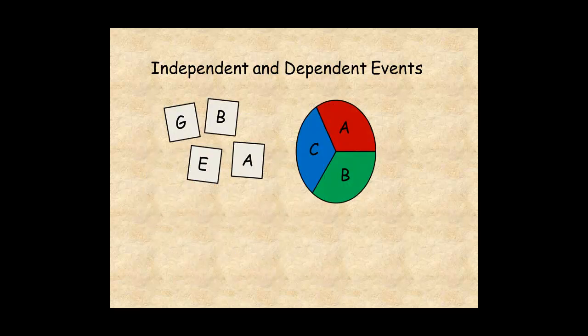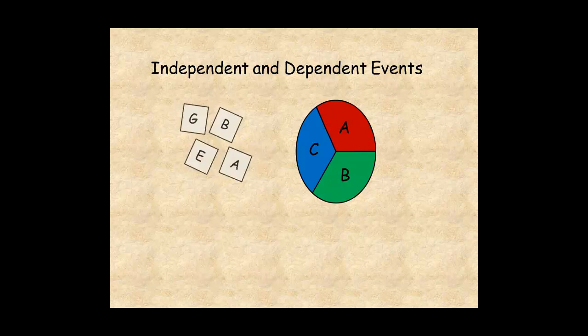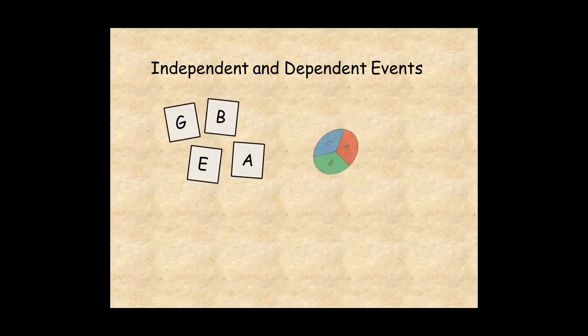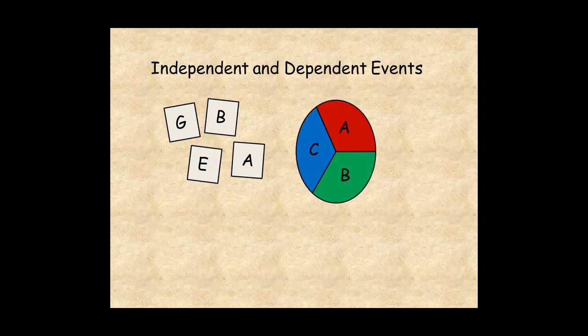In this example, you pick a letter from the tiles and a letter from the spinner. The probability of a vowel from the tiles is two out of four, or one-half.